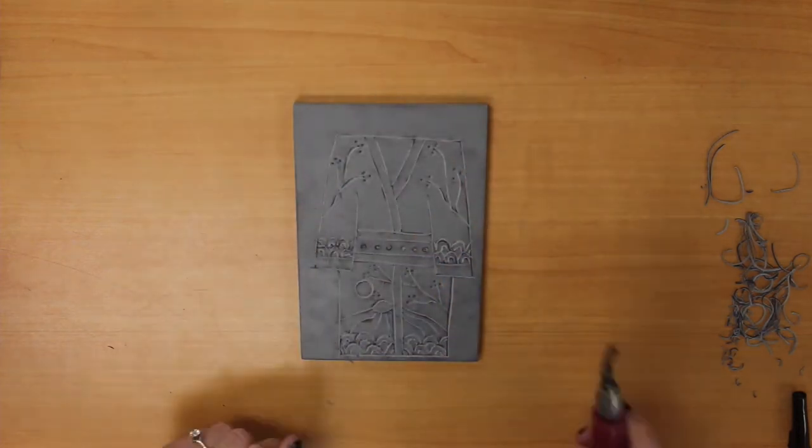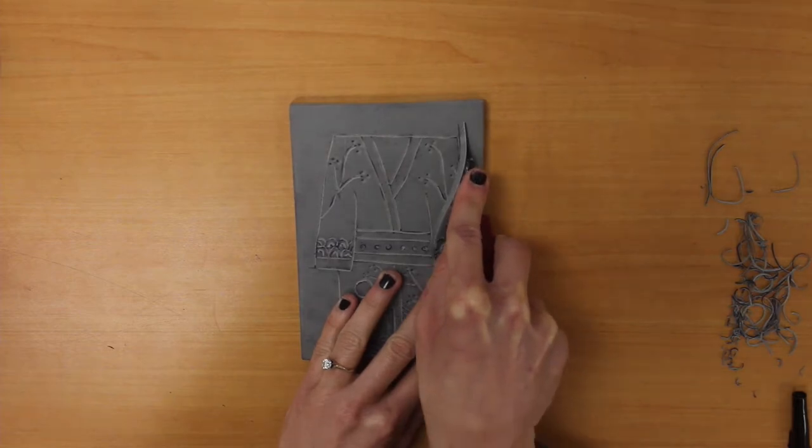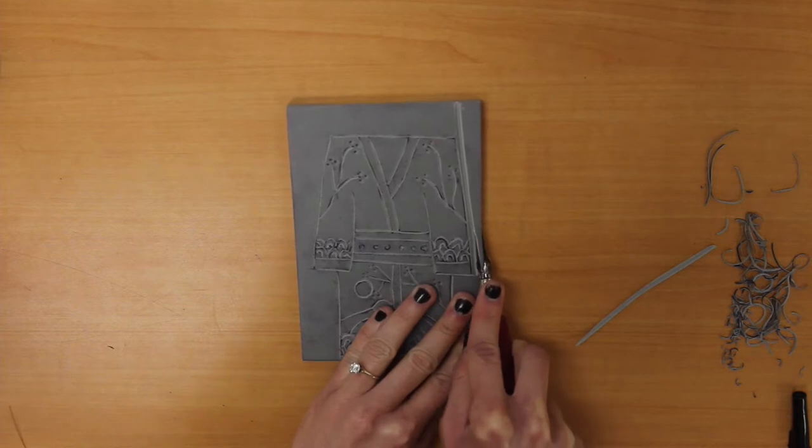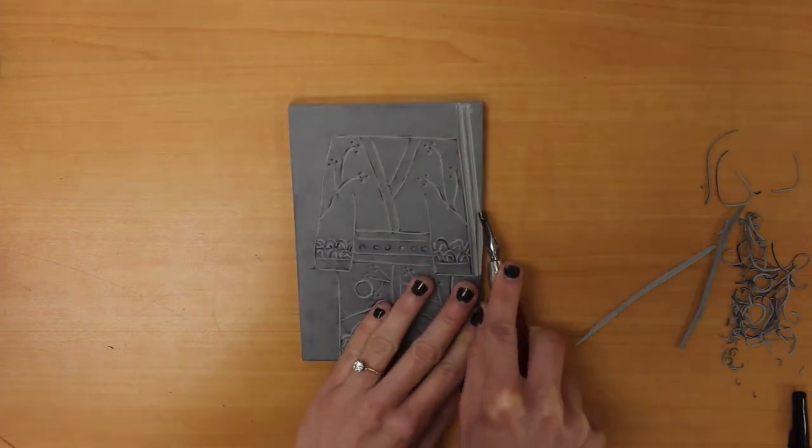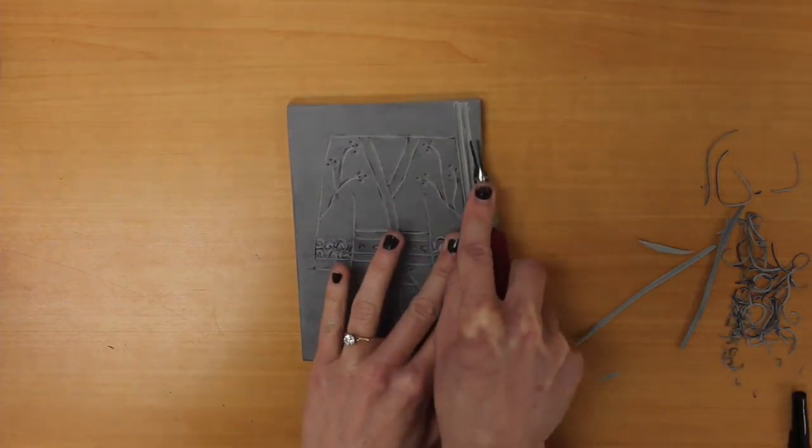We don't want to see any part of the background so we're going to carve away the unnecessary parts around our kimono that we do not need. Again please make sure that your pointer finger is on the spot right before the blade so that you are guiding your tool as you are carving away from your block.